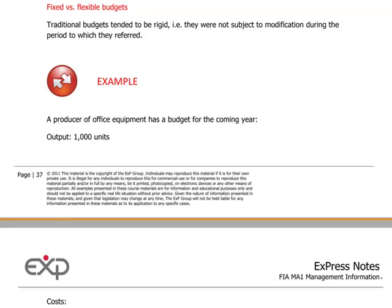Last time we spoke about the budgetary process. Today we want to look at some numbers to illustrate the idea of flexible versus fixed budgets. Fixed budgets, of course, would be the idea of setting up a budget for the year and not altering it afterwards, just using it throughout the year. This has certain limitations in terms of usefulness, because things often don't work out as planned.